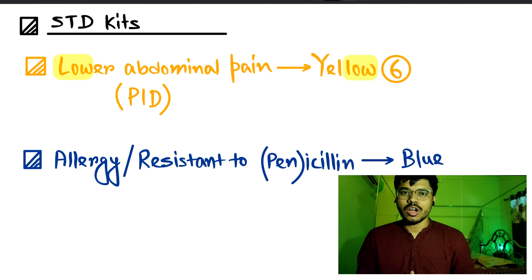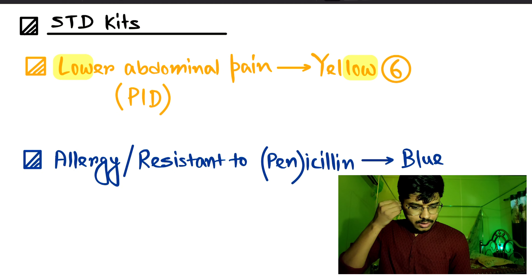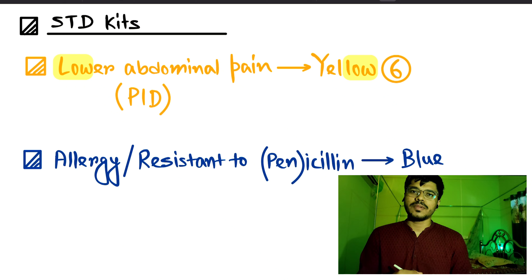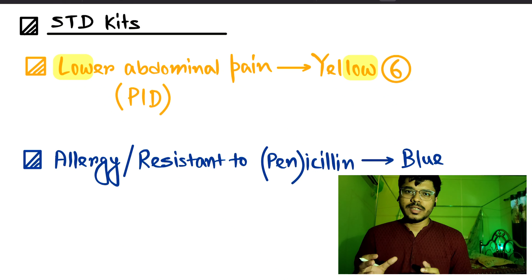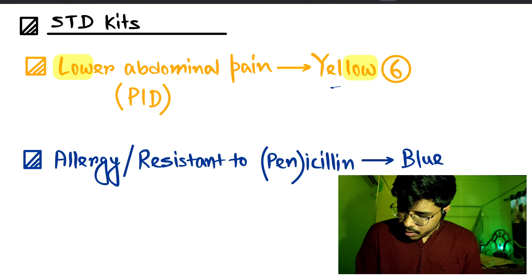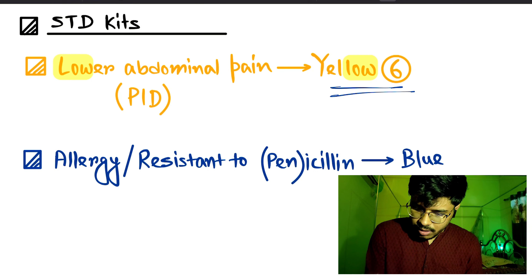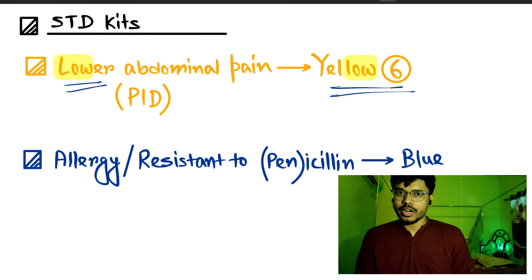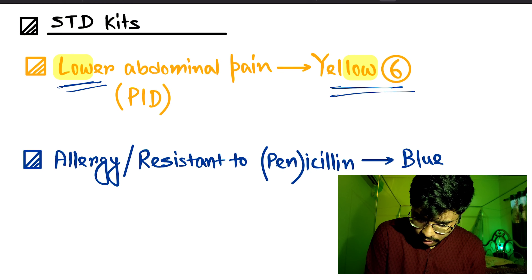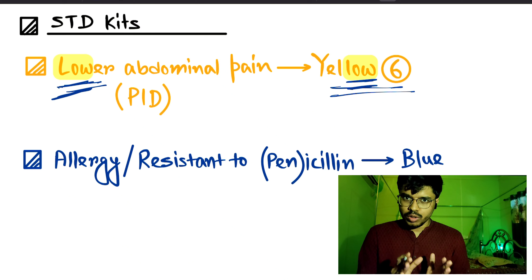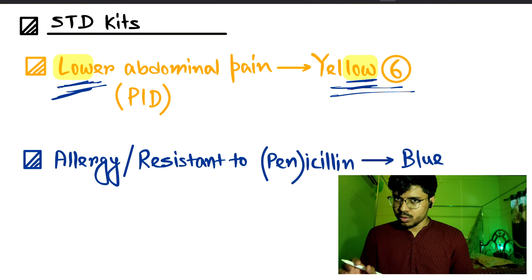Hi guys, let's quickly talk about HDD kits and their color coding. There are seven kits with seven different color codings. We'll try to remember the color of each kit using mnemonics. Kit number six is used for lower abdominal pain — remember it as EOLO: 'low' for lower abdominal pain.